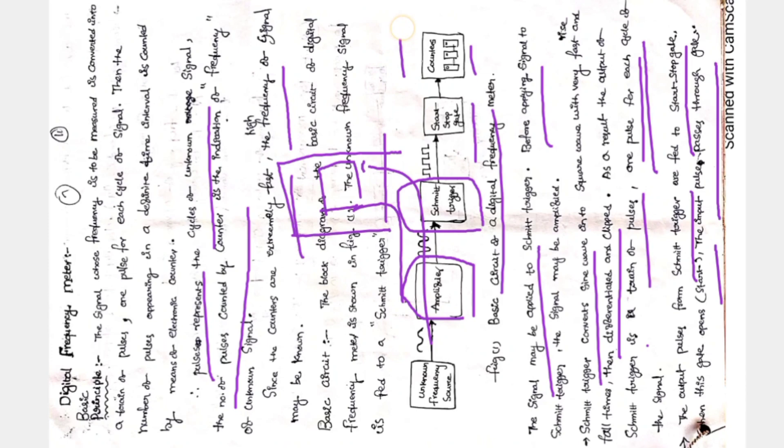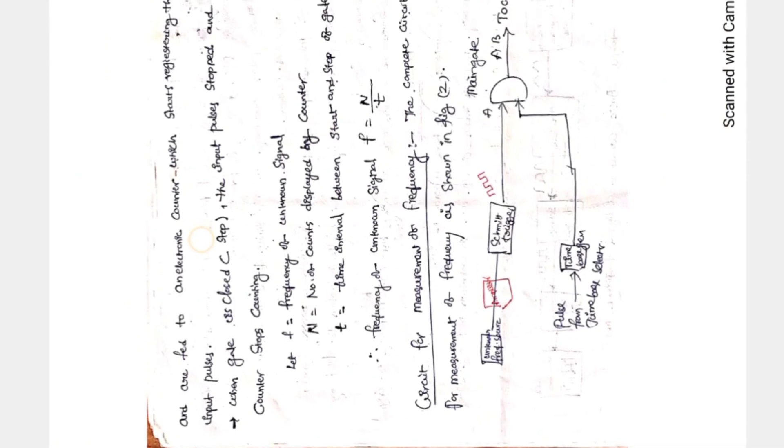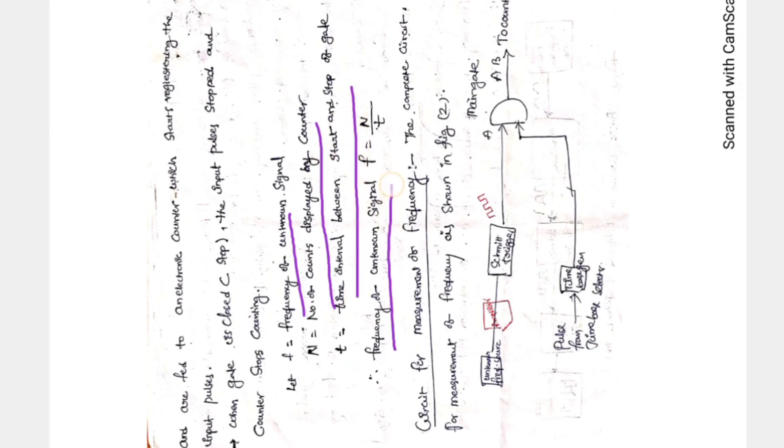The output pulses from the Schmitt trigger are fed to the start and stop gate. When the Schmitt trigger turns on, the start gate opens and pulses pass through; at the end, the gate stops and the counter reads the number of pulses generated. The counter registers input values when the gate is open and stops counting when the gate closes. If f is the frequency, n is the count displayed, and t is the time interval between start and stop, then the frequency f equals n divided by t.